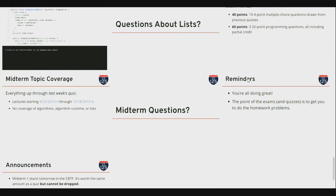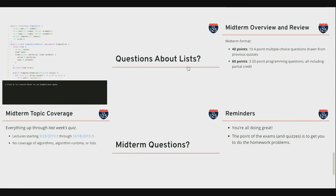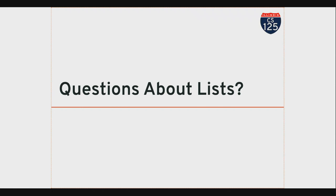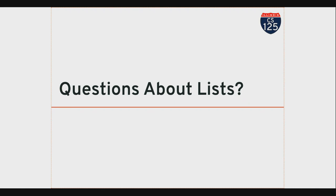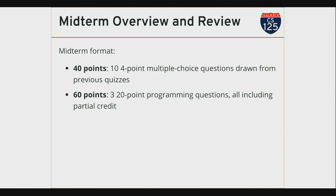We'll talk about doubly linked lists on Wednesday. Let me talk about the midterm. There are ten four-point multiple-choice questions, identical to questions that have been on previous quizzes — nothing new. 60 points come from three 20-point programming questions, all including partial credit. The topic coverage is through the last quiz — nothing from last week on lists or algorithm runtime will be on the midterm; that will appear on next week's quiz.